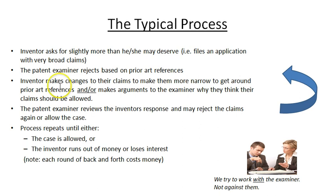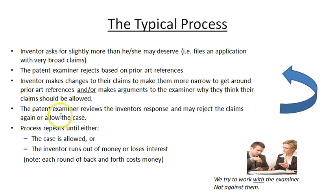Sometimes you can make those type of arguments, but it's risky. What I've seen most people do is come in with a combination of both changing their claims slightly and coming in with arguments on why they think their invention is different from those prior art references. Then the patent examiner will review your response, and they will probably either reject your claims again, or if they agree with you, they will issue a notice of allowance and allow your case.